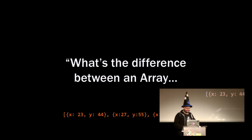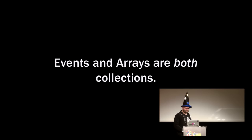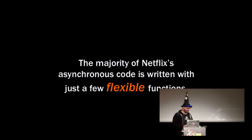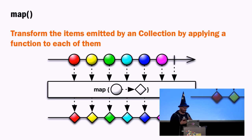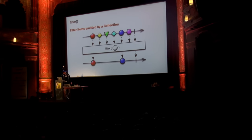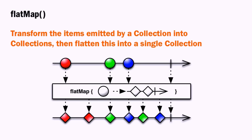What's the difference between an array and an event? They're both collections — and that's really the key part. We can write the majority of Netflix's code with just a few flexible functions. As Andre talked about: map, to transform each individual item; filter, to filter items emitted by a collection; merge, to combine them; and flat map, which is map and merge all into a single collection.